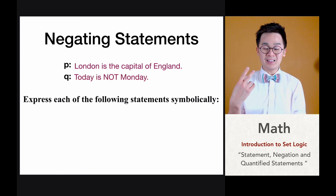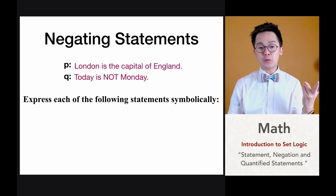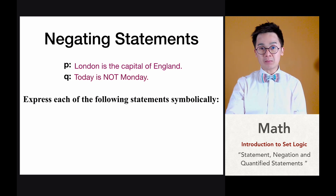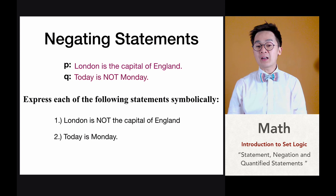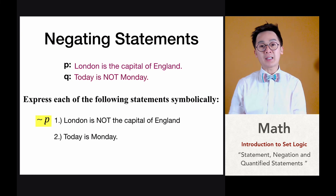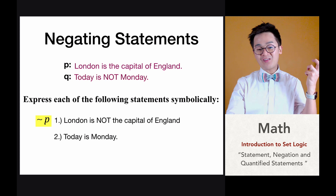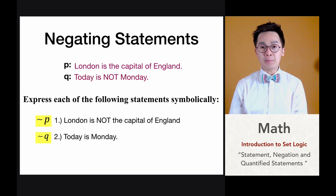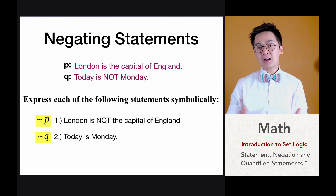Let's say meron tayong dalawang examples na statements: P is London is the capital of England, and Q is today is not Monday. Express natin yung mga following statements symbolically: number one, London is not the capital of England, and two, today is Monday. Yung London is not the capital of England can be denoted by not P. Yung number two, today is Monday — since yung given statement natin is today is not Monday, yung ating negation ng Q or not Q would be today is Monday. Yan yung paraan ng paggamit ng mga symbols and yung negation at pag-identify ng statement at hindi statement sa given symbolic logic.